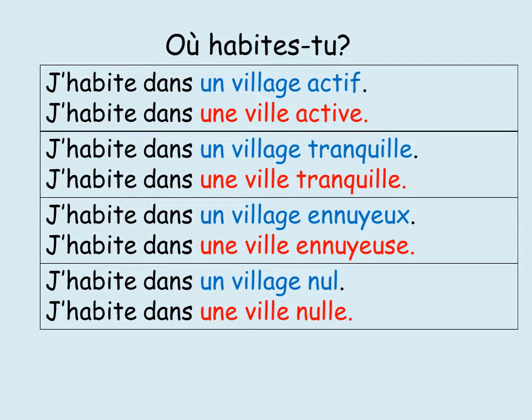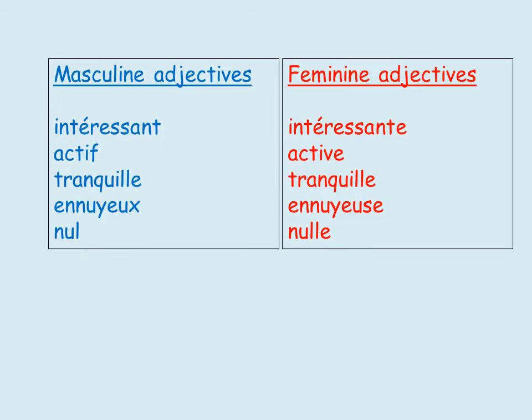Those are the rules we need to remember. You might want to pause the video and make a note of the differences between the masculine and feminine adjectives: intéressant → intéressante, actif → active, tranquille → tranquille (same), ennuyeux → ennuyeuse, nul → nulle.